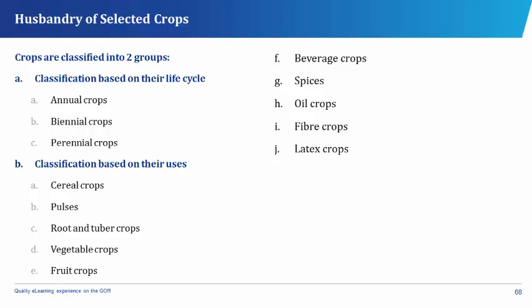Based on their life cycle, we have the annual crops, the biannual crops, and the perennial crops. And based on their uses, we have the cereal crops, the pulses, the root and tuber crops, the vegetable crops, fruit crops, beverage crops, spices, oil crops, fiber crops, and the latex crops.